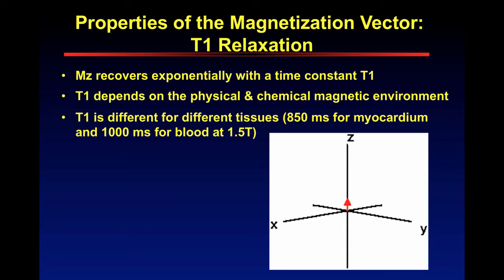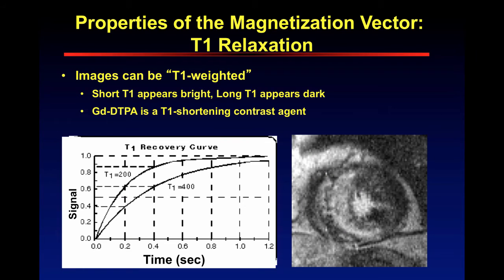T1 depends on the physical and chemical magnetic environment, and T1 is different for different tissues. For example, it's 850 milliseconds for myocardium and 1,000 milliseconds for blood — so it takes longer for the magnetization Mz to recover in blood than in the heart. Images can be T1-weighted: depending on the pulse sequence, short T1 appears bright, long T1 appears dark.